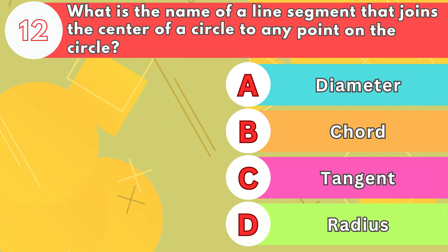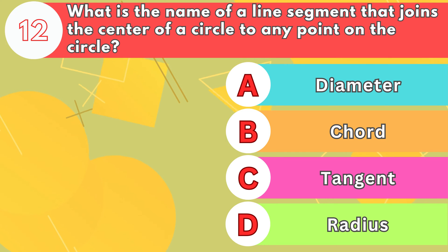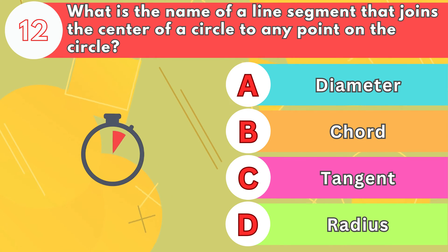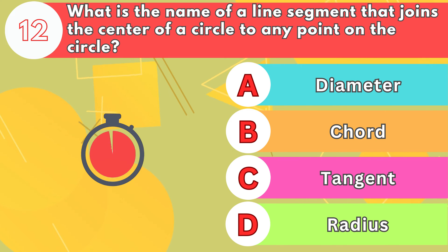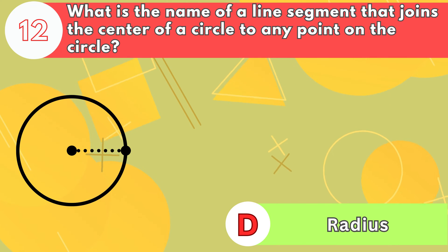Number 12. What is the name of a line segment that joins the center of a circle to any point on the circle? The answer is letter D, radius.